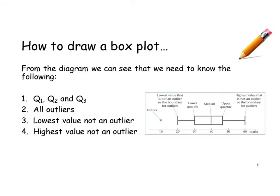Now, how do we draw a box plot? We can see from the diagram that we need to know Q1, Q2, and Q3 — the quartiles — any outliers, the lowest value that isn't an outlier, and the highest value that isn't an outlier. Once we know these pieces of information, we can draw our box plot.